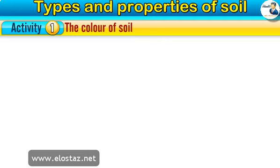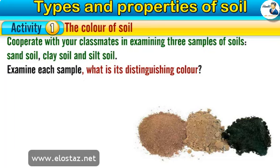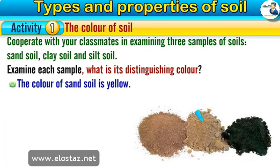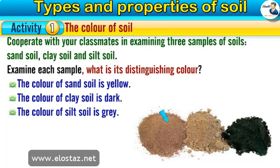Activity 1: The color of soil. Let's carry out this activity to know the different colors of the three types of soil. Cooperate with your classmates in examining three samples of soils — sand soil, clay soil, and silt soil. Examine each sample. What is its distinguishing color? The color of sand soil is yellow. The color of clay soil is dark. The color of silt soil is gray.